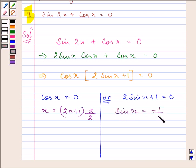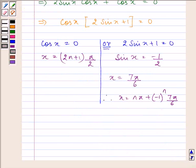and here on simplifying, we have the value of sin x as minus 1 by 2 which says that x is equal to 7 pi by 6. Therefore, x is equal to n pi plus minus 1 to the power n, 7 pi by 6.